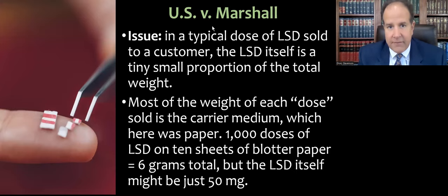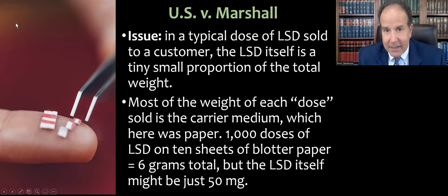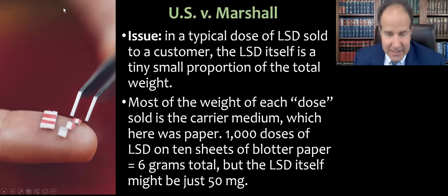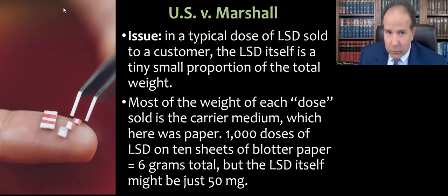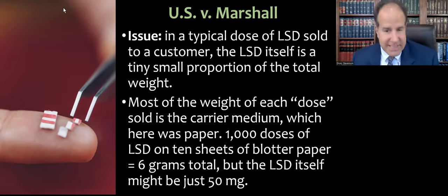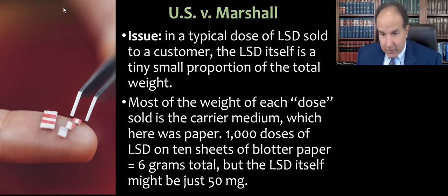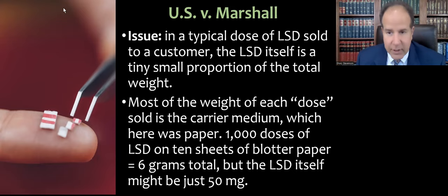The typical dose of LSD sold on the street is one where the LSD is a tiny proportion of the total weight. Most of the weight of each dose is actually the carrier medium, which here was paper — the most common form. LSD is very, very potent. A single dose of the pure chemical would basically be too small to see or handle, so it's diluted in alcohol, soaked into blotter paper. The alcohol evaporates, leaving the LSD mixed into the paper fibers.